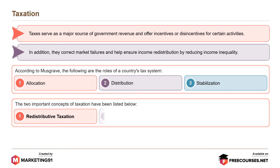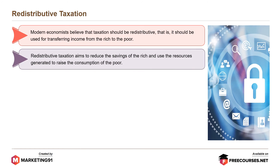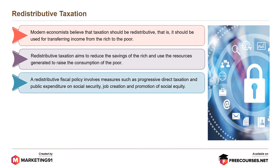The two important concepts of taxation are redistributive taxation and anti-inflationary taxation. Modern economists believe that taxation should be redistributive, that is, it should be used for transferring income from the rich to the poor. Redistributive taxation aims to reduce the savings of the rich and use the resources generated to raise the consumption of the poor. A redistributive fiscal policy involves measures such as progressive direct taxation and public expenditure on social security, job creation and promotion of social equity.